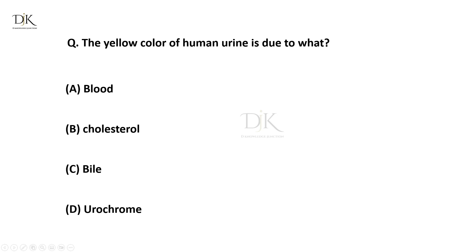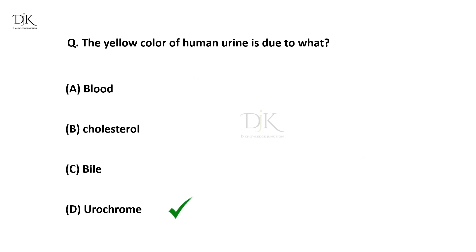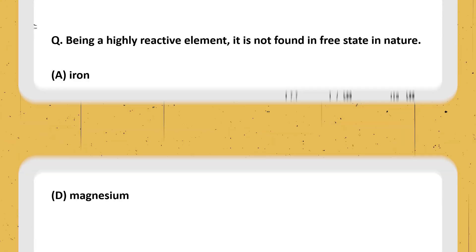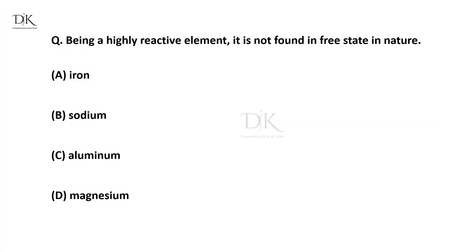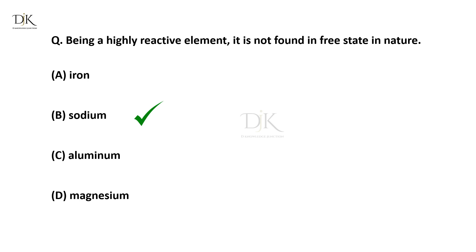The yellow color of human urine is due to what? The right answer is Urochrome. Being a highly reactive element, it is not found in its free state in nature. The right answer is Sodium.